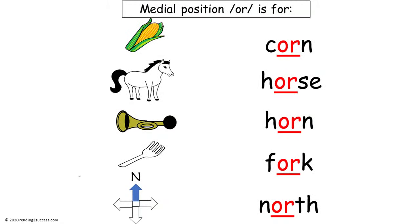Now follow the same routine with the medial position of O-R in each word: corn, horse, horn, fork, and north.